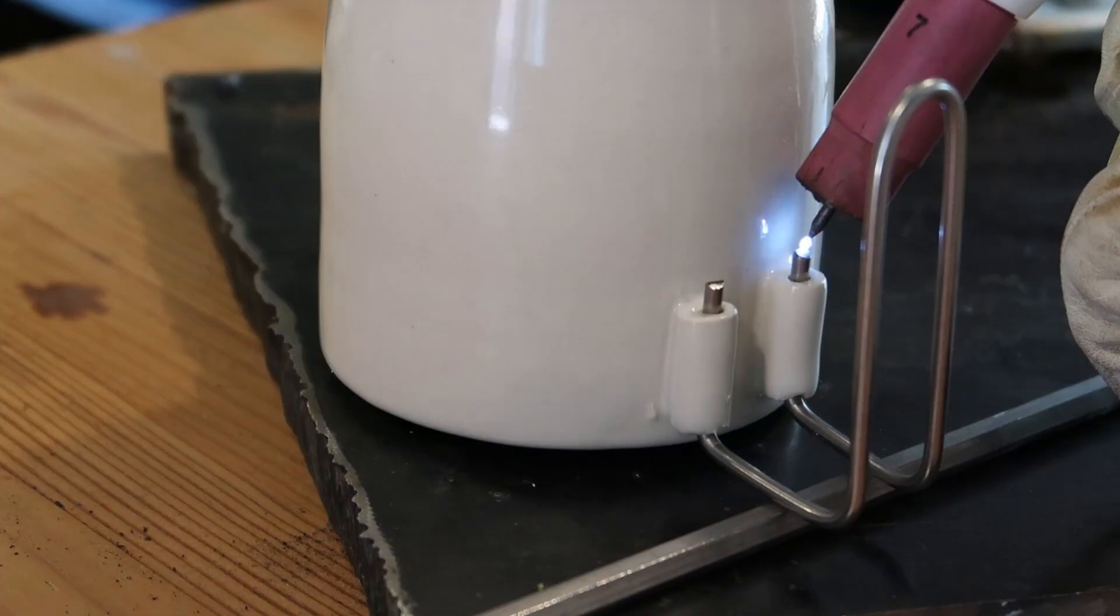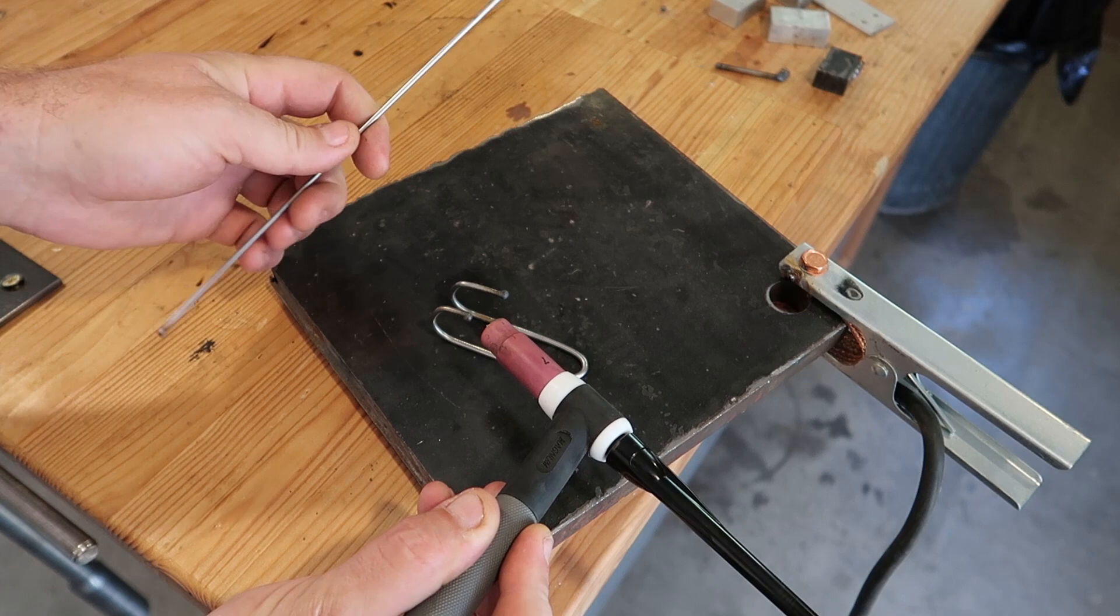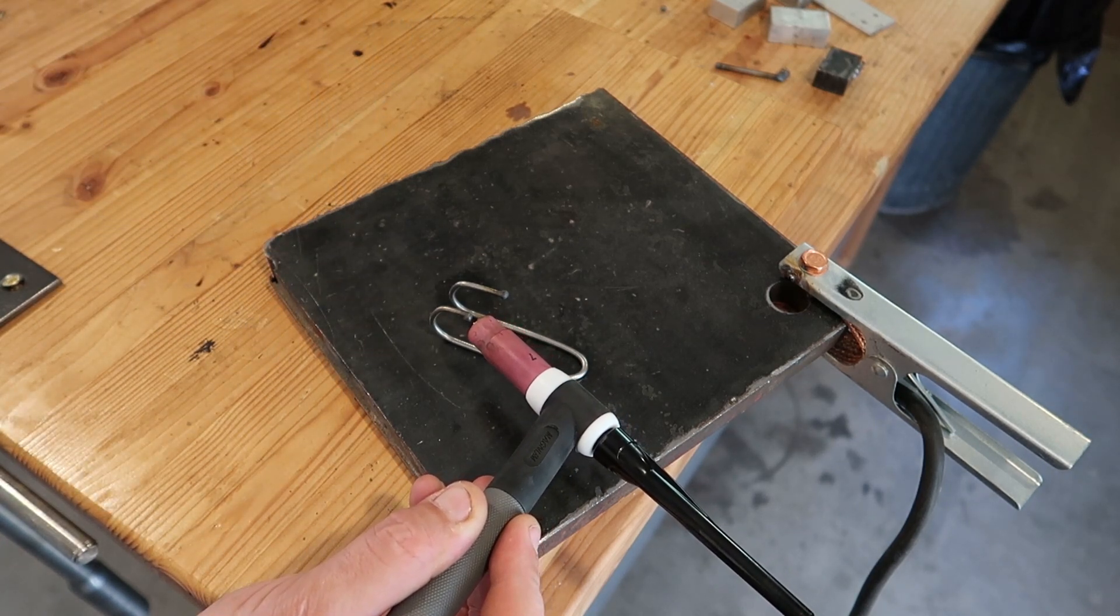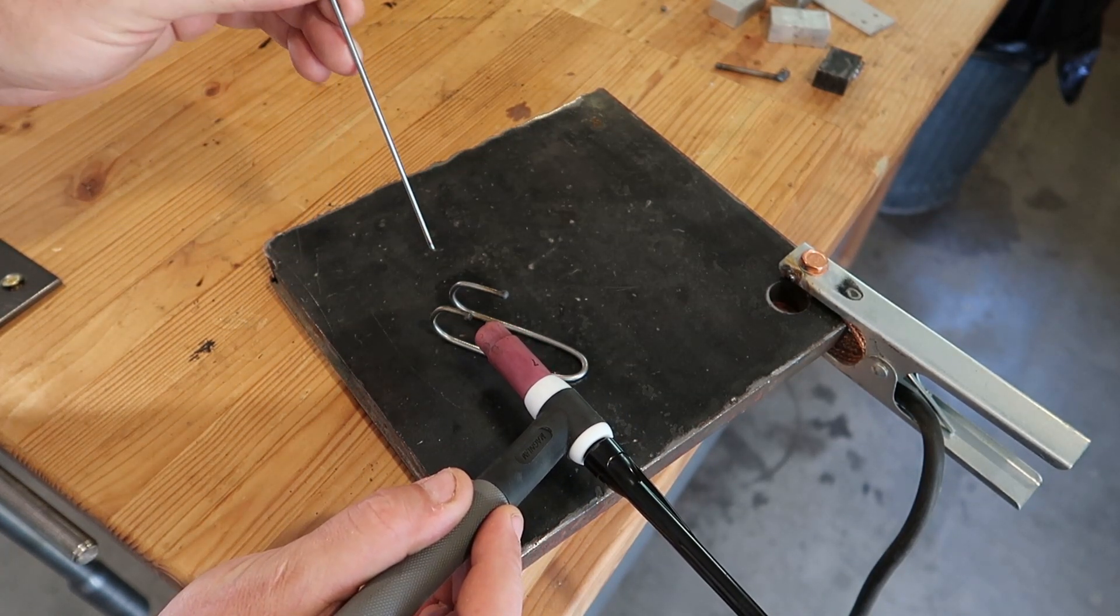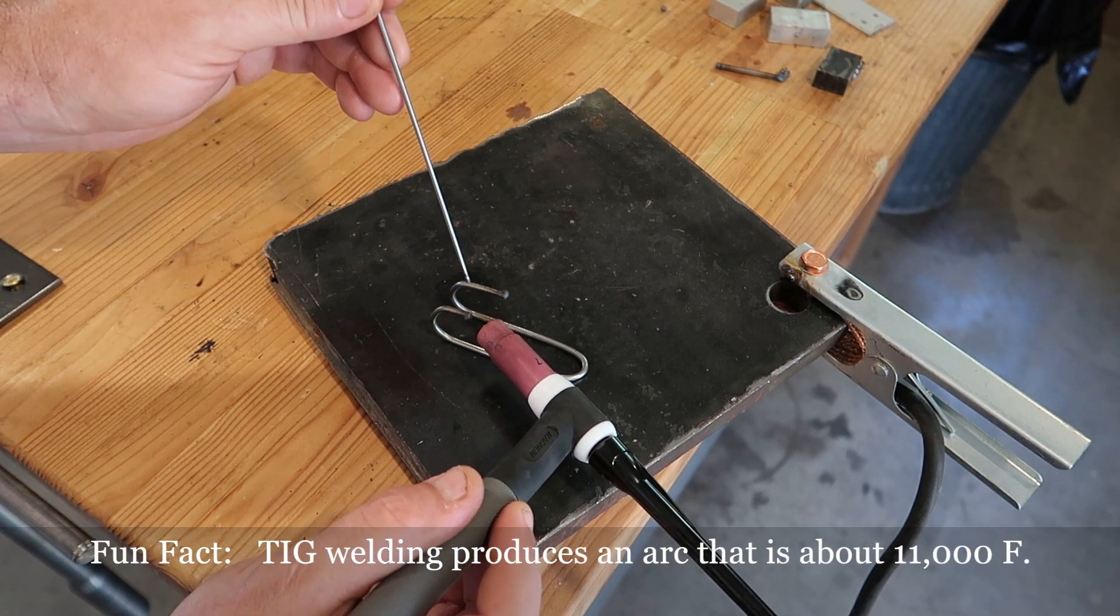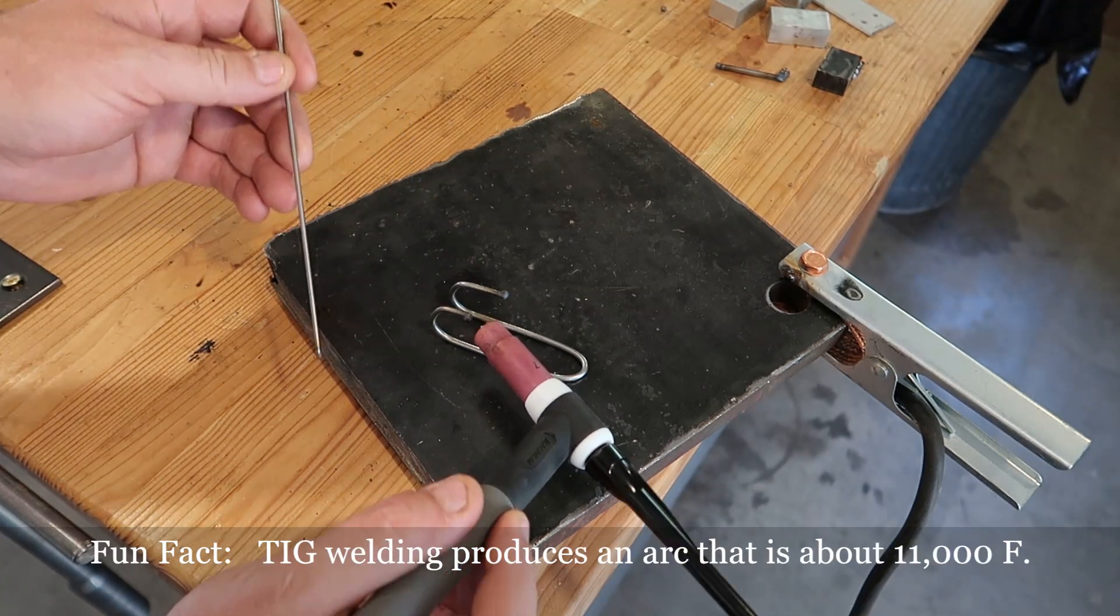And off the tip comes a tiny little flame, and it's going to be hard for you to see, it'll just look really bright, but a tiny little flame comes off that through your welding helmet you can see clearly, and it puts down a tremendous amount of heat very, very accurately.